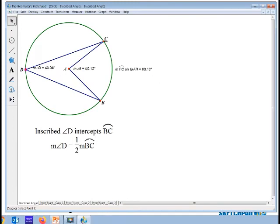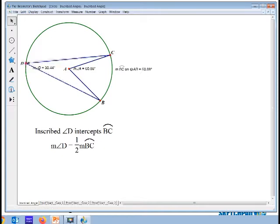Now, if I change the measure of this arc to make it smaller, then the inscribed angle is still half as much. It's half as much as the arc is, and that's always going to be the case.